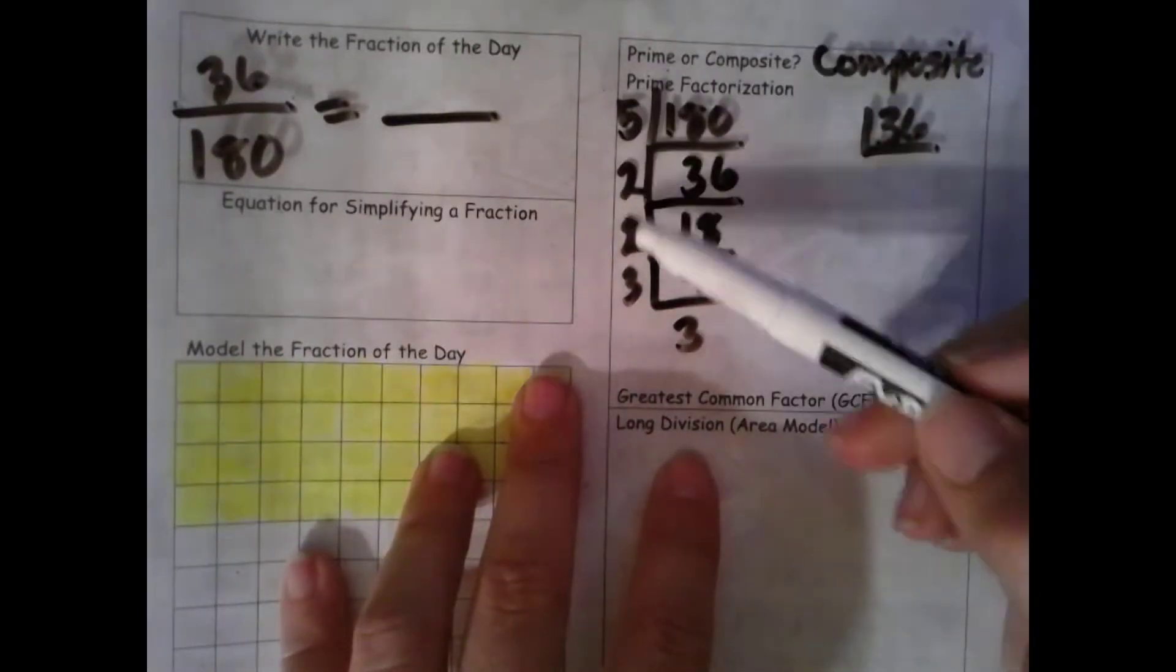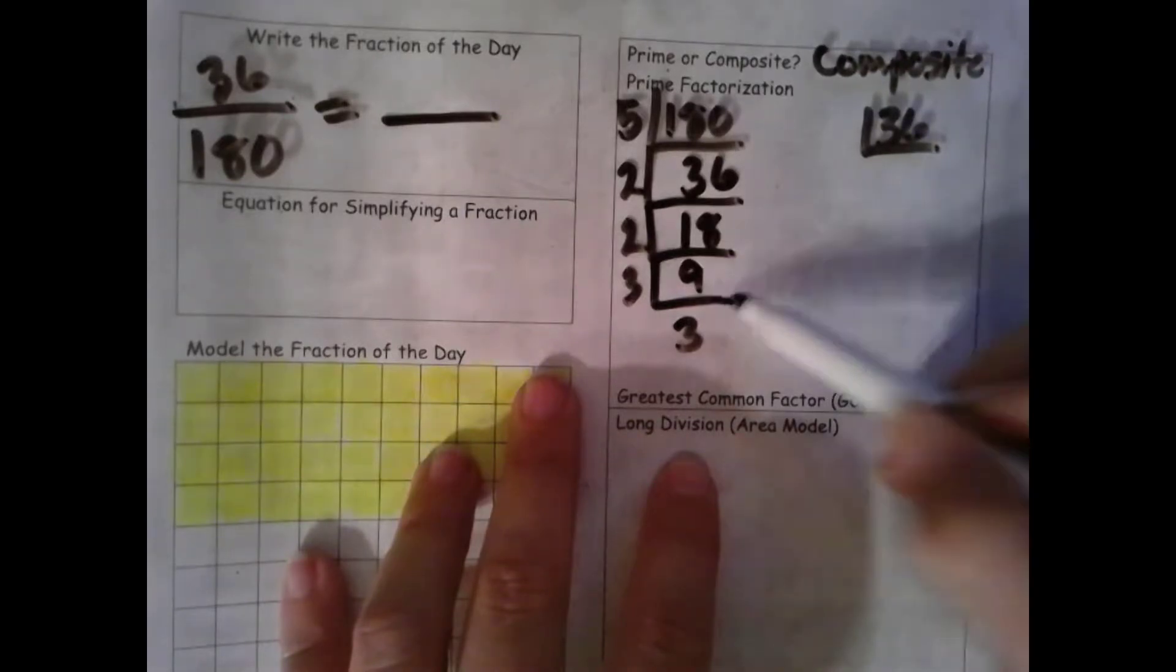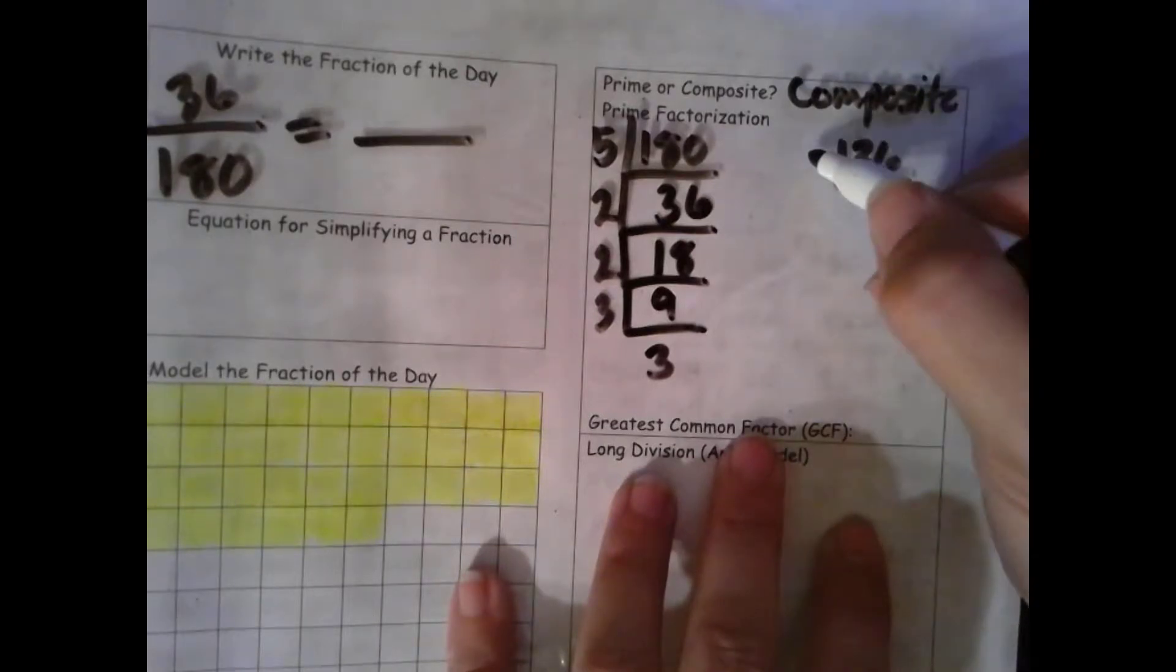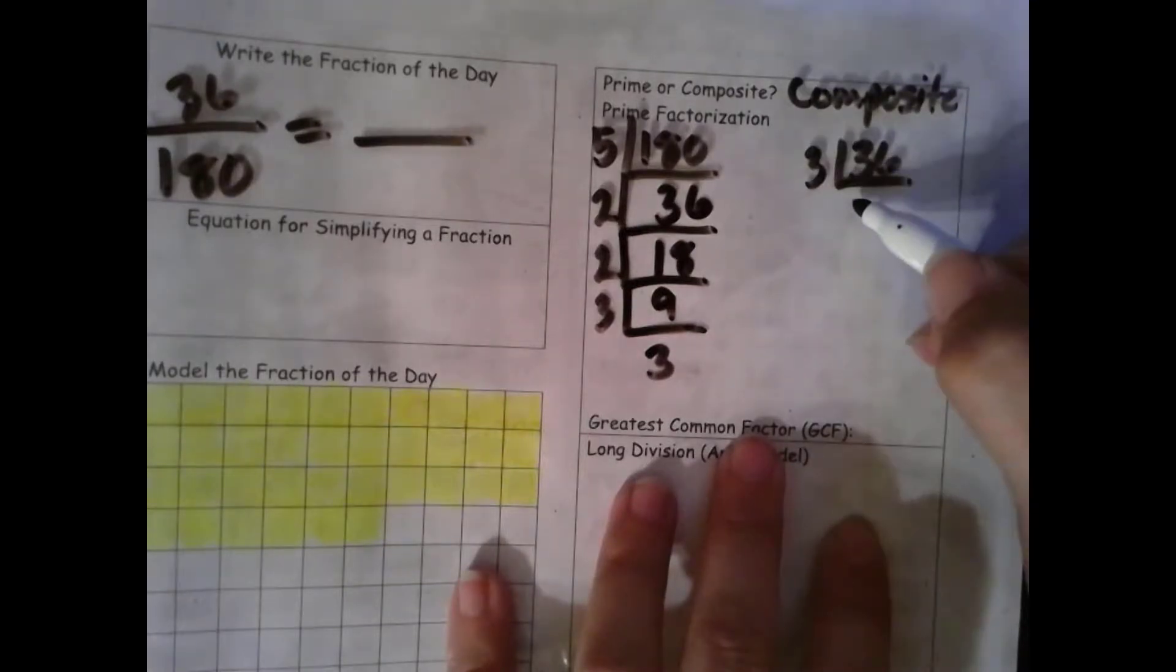We're only dividing by prime numbers in our prime factorization in this upside-down division. Over here, I can divide by 3, because 3 plus 6 is 9, and 9 is a multiple of 3. 3 times 12 is 36.